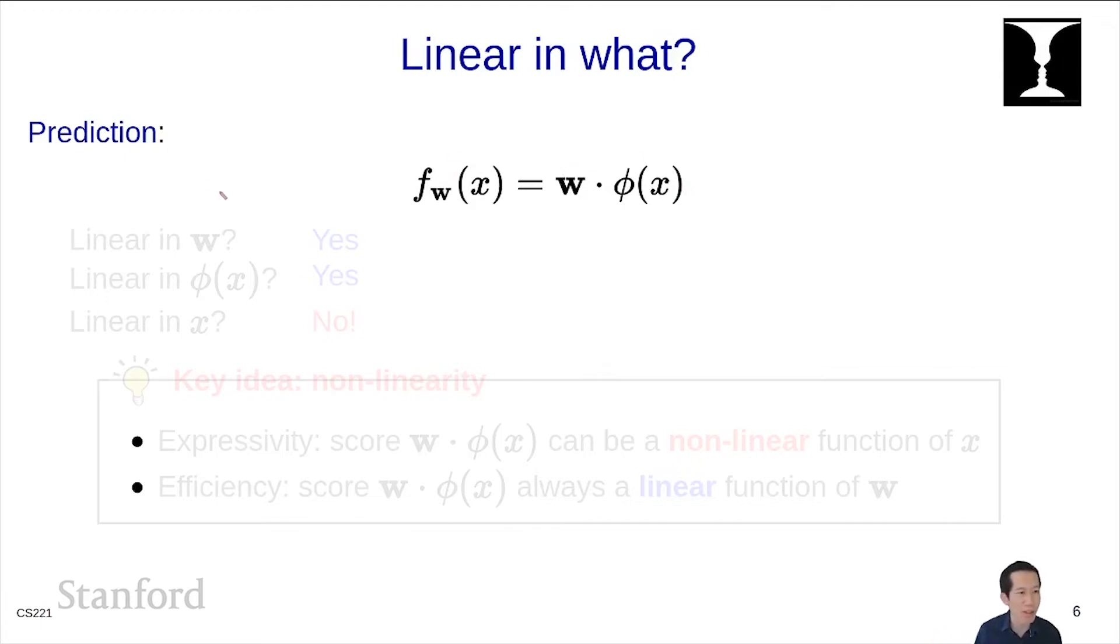Remember the prediction is w · φ(x), so that's the score. And the question is linear in what? Is the score linear in w? Yes, because the score is just some constant times w. Is it linear in φ(x)? Yes, because it's some thing times φ(x). How about is it linear in x? Well, the answer is no, because φ(x) can be arbitrary, so it doesn't have to be linear in x.